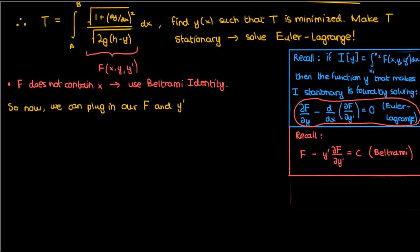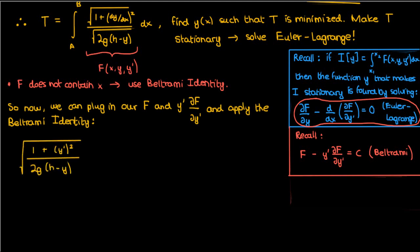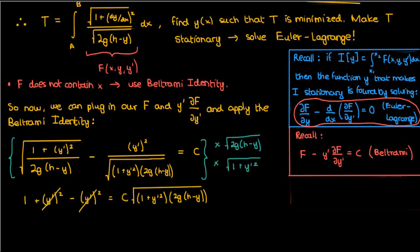So let's go ahead and plug everything in, and after taking the partial of capital F with respect to y prime, and simplifying, here's what we'll end up with. The square root of (1 plus y prime squared) over 2g(h minus y) minus y prime squared over the square root of (1 plus y prime squared) times 2g(h minus y) equals c. We can go ahead and move the 2g(h minus y) term to the right by multiplying it on both sides, and after that we can also multiply both sides by the square root of (1 plus y prime squared). These y prime squares just cancel, and we'll be left with alone 1 on the left. We can now eliminate the square root by squaring the equation, and this is what we'll get.